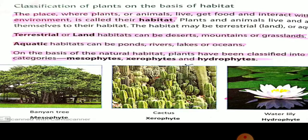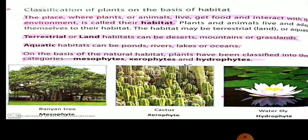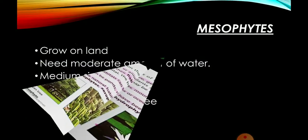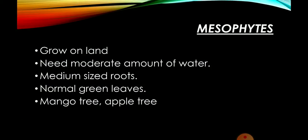Mesophytes जो होते हैं वो land पे रहते हैं। Xerophytes जो होते हैं वो deserts में होते हैं। और hydrophytes जो होते हैं वो पानी में होते हैं। Mesophytes — these grow on land, इनको पानी भी बहुत कम चाहिए। इनकी जो roots होते हैं वो medium size की होती हैं — न ज़्यादा लंबी, न ज़्यादा छोटी। इनकी leaves भी green होती हैं, normal green leaves होती हैं। The example is simple mango tree and apple tree.